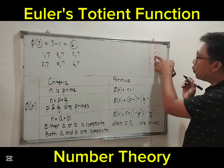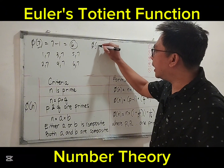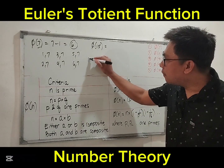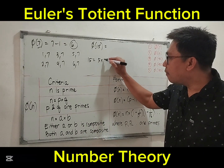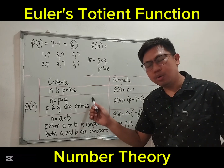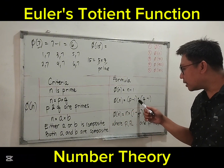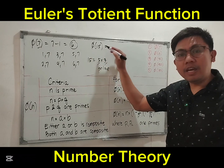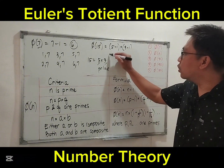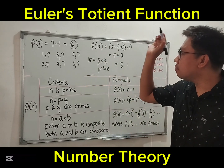Number 2: phi of 15. So 15 is not a prime number. 15 equals 5 times 3, and both 5 and 3 are prime numbers, so we use case 2. If n equals p times q where p and q are primes, the formula is (p minus 1) times (q minus 1). Therefore phi of 15 equals (5 minus 1) times (3 minus 1) equals 4 times 2, which equals 8.